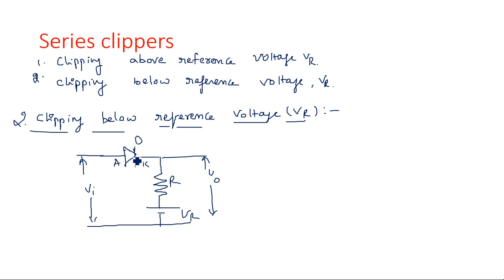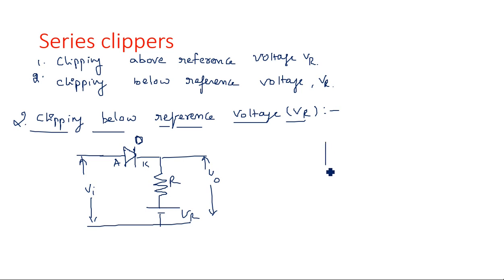This is the anode and this is the cathode. The diode is said to be in off state when input is greater than Vr, and the diode is said to be in off state when input is less than Vr. The expected output waveform is drawn on the time axis as the output voltage, showing clipping below the reference voltage.